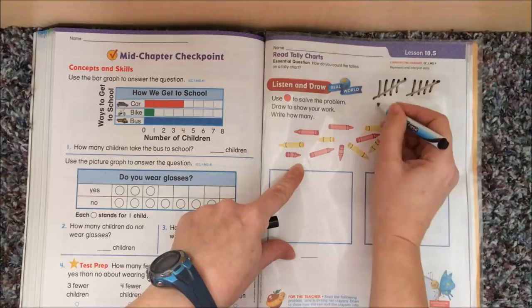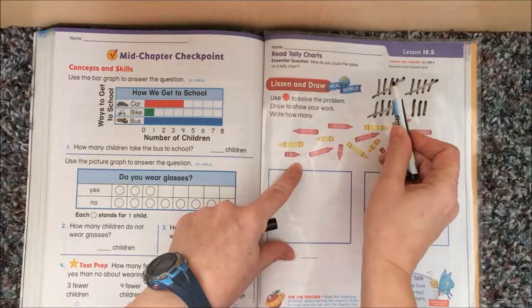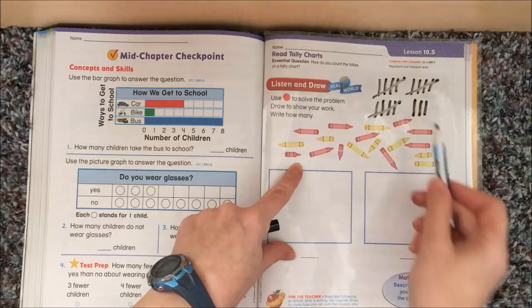Every fifth one we make as a cross. That makes it easier to count. Instead of having to count 1, 2, 3, 4, 5, 6, 7, 8, 9, 10, when we're recounting what we've made, we can just count 5, 10, 15, and then count on 16, 17, 18. You don't have to draw that.